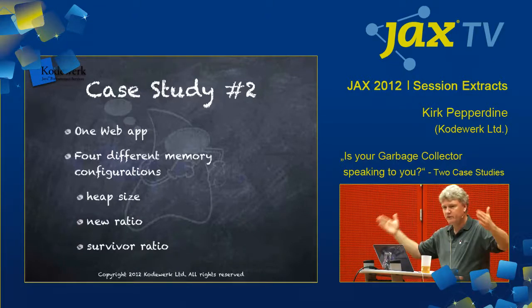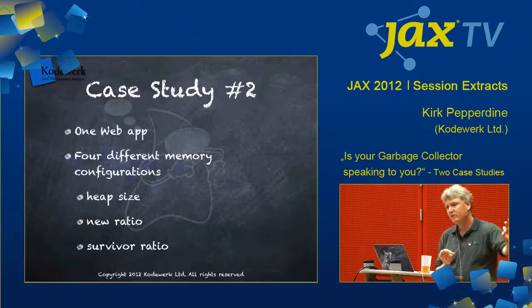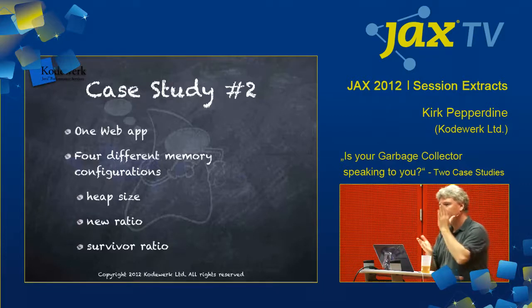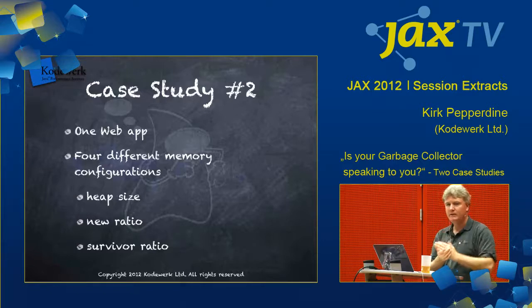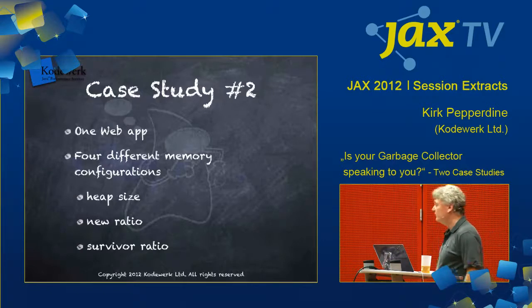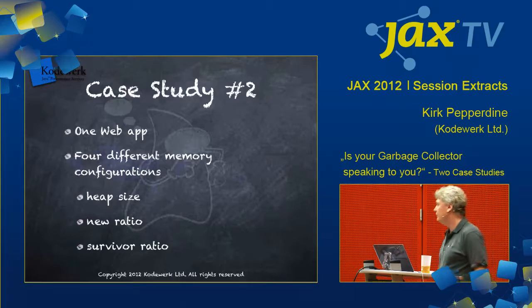The problem was that the space was so small. There were so many temporary objects being created that it was causing the garbage collector to run really, really frequently. So we would go into the logs and simply count the number of times — what's the frequency of collection in this case?